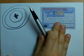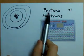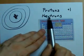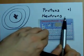The nucleus itself contains protons, which have a charge of positive 1, and neutrons, which have no charge at all.